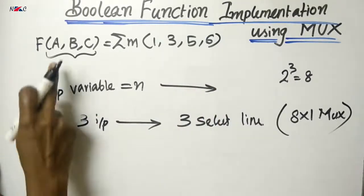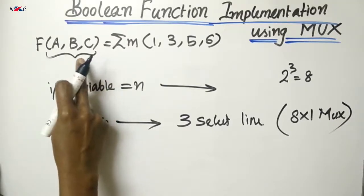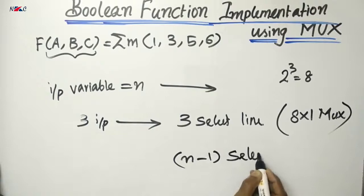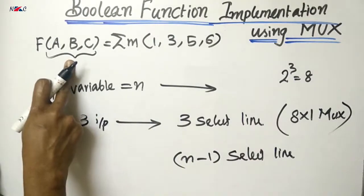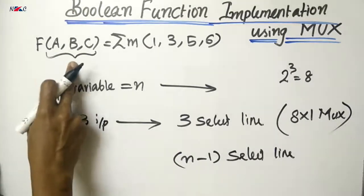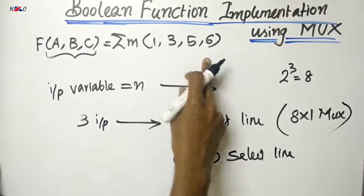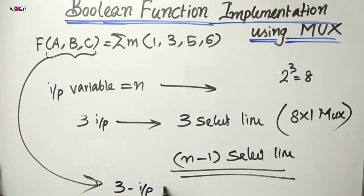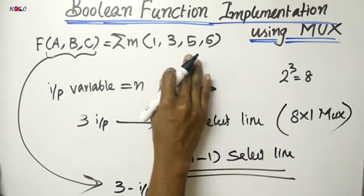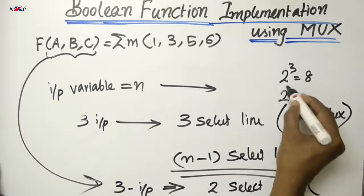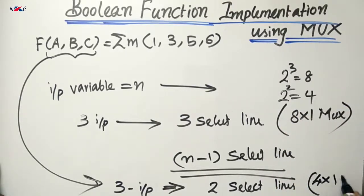Second method: if the number of input variables is equal to n, we can implement the function by using a multiplexer which has n minus 1 select lines. For example, with 3 input variables, we can implement the function using a multiplexer with 3 minus 1, that is, two select lines. With two select lines, the number of inputs is 2 raised to 2, which equals 4. So the multiplexer will be a 4-by-1 MUX.